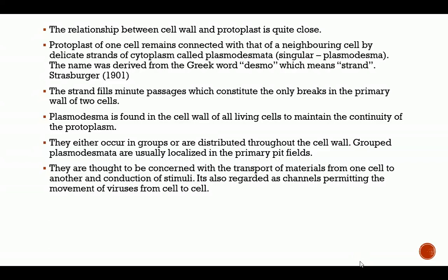Plasmodesmata are also regarded as channels permitting the movement of viruses from cell to cell. For a cell to be infected, it is truly through plasmodesmata that a virus will pass, because the primary cell wall limits the movement of materials in and out. It is through plasmodesmata that bacteria, viruses, and all foreign bodies could pass through and infect all the cells around it.